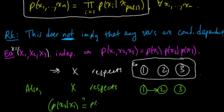And that's exactly what, so since x1 and x2 are independent by assumption, then this is true. And so, it also respects this graph.